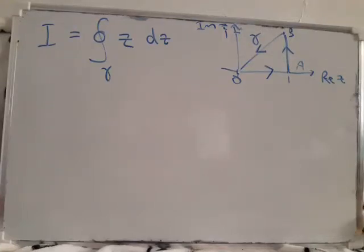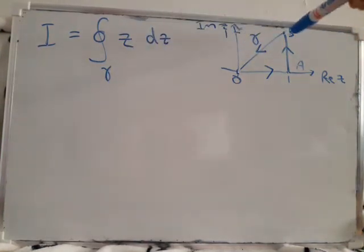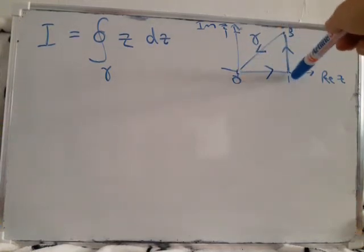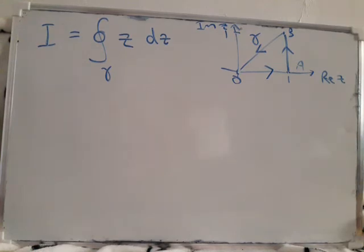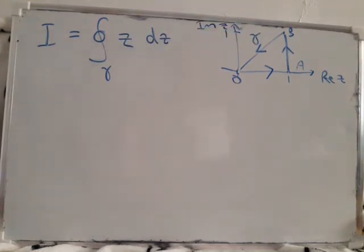We're going to integrate z around this triangle. This symbol gamma represents the path from O to A to B back down to O. For people who know about complex variables already, they'll immediately see that the answer is zero.